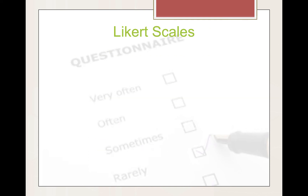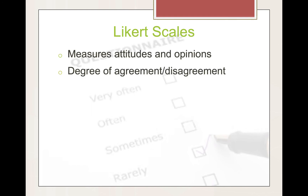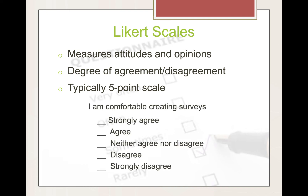Likert scales measure attitudes and opinions and give you a degree of agreement or disagreement. They're typically a five-point scale, although you might see them as a six-point scale with no neutral point or a seven-point scale to give more choice. Here's an example: 'I'm comfortable with creating surveys,' from strongly agree to strongly disagree.